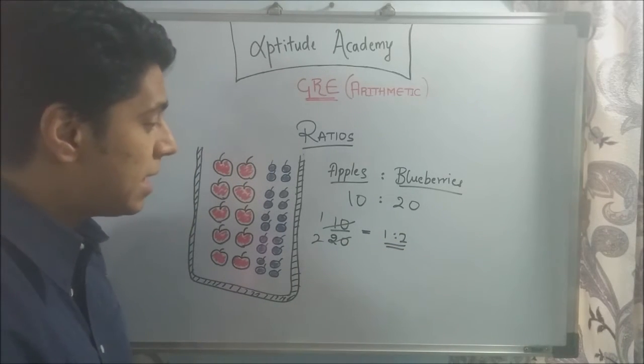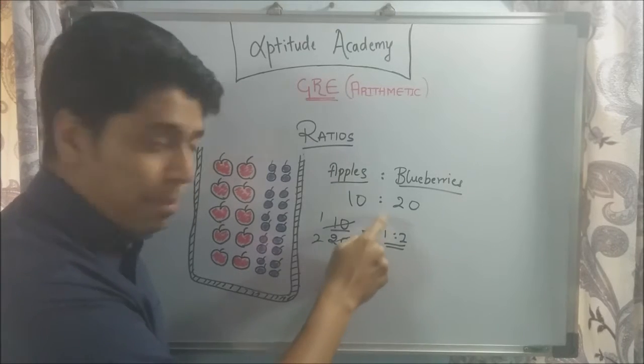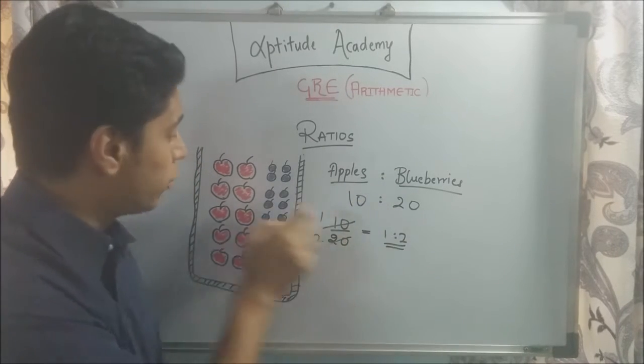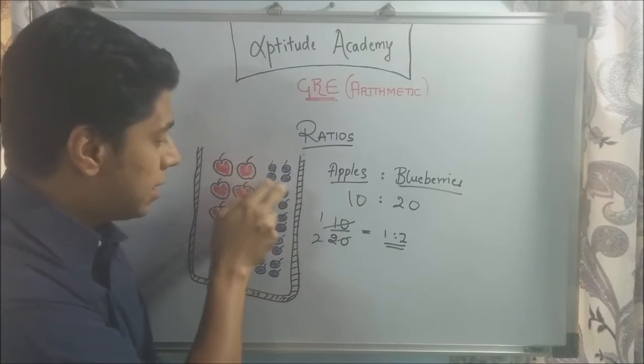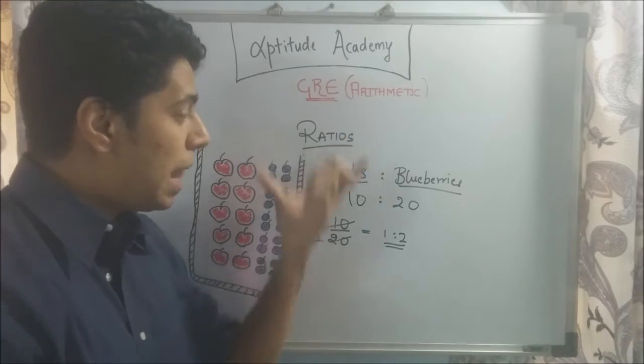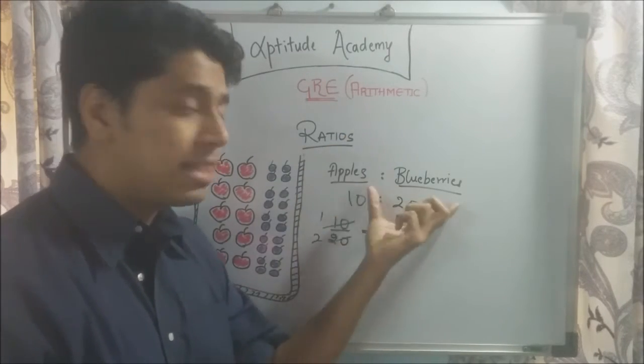So basically what you're saying is, it says that for every one apple, there are two blueberries. And that is how your ratio helps you form a connection between two quantities that are completely unrelated.